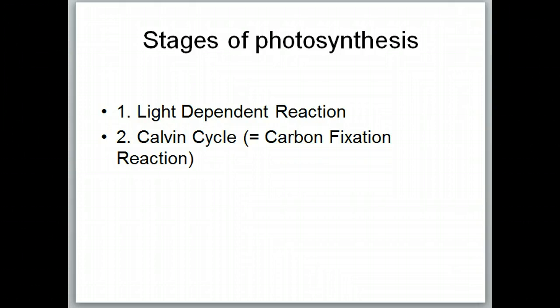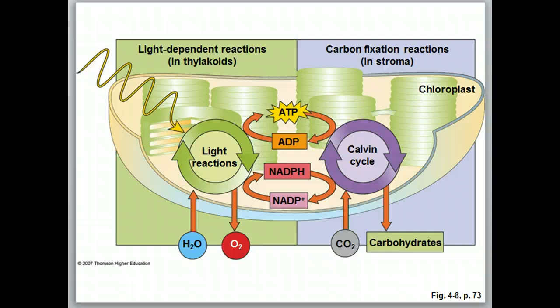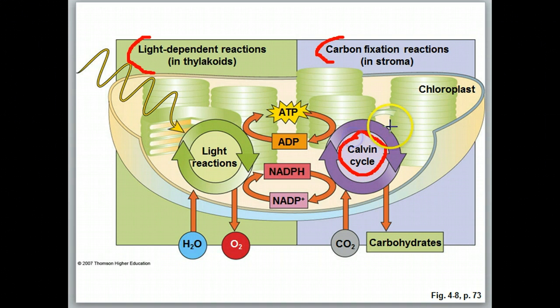In this section we're going to look at the stages of photosynthesis, which are the light-dependent reaction and then the Calvin cycle, which is also known as the carbon fixation reaction. Primarily what we want to look at in this video is the light-dependent reaction. This diagram is a summary of the entire process of photosynthesis. You've got your two stages: the light-dependent reaction and then the carbon fixation process, which occurs in the Calvin cycle.